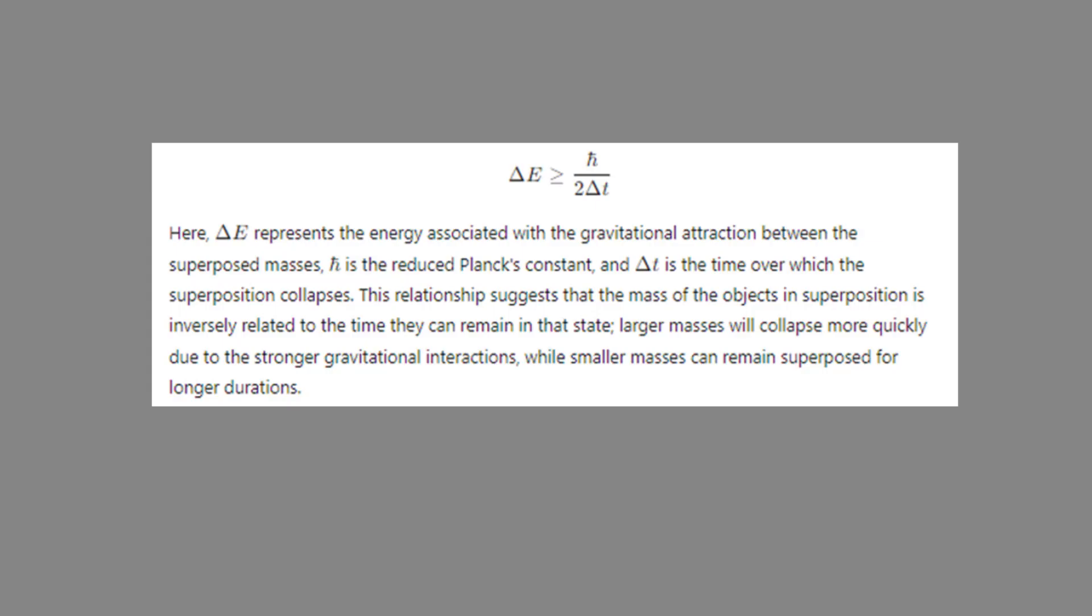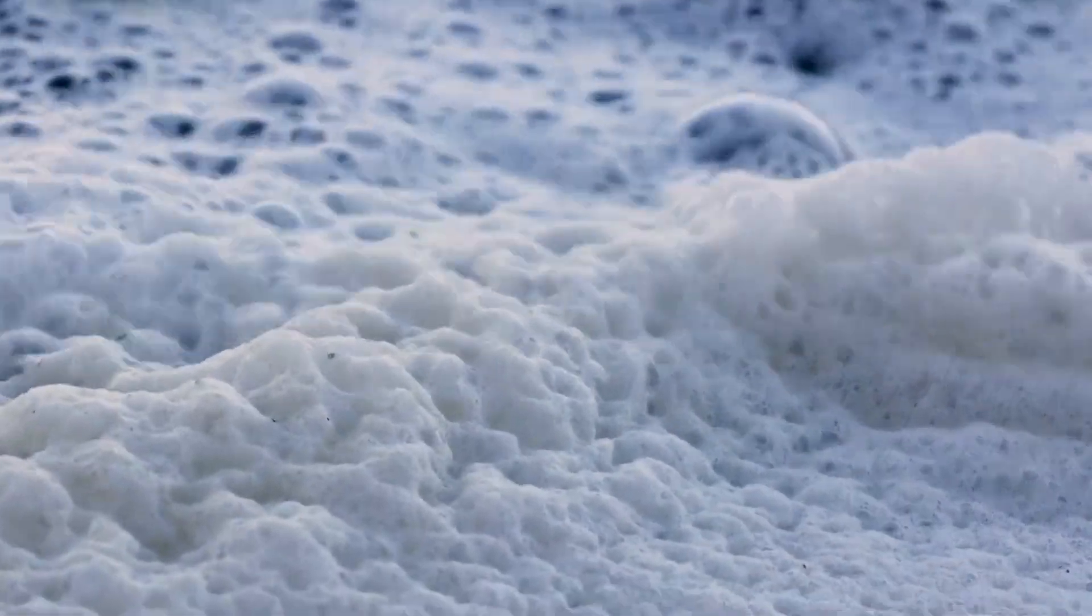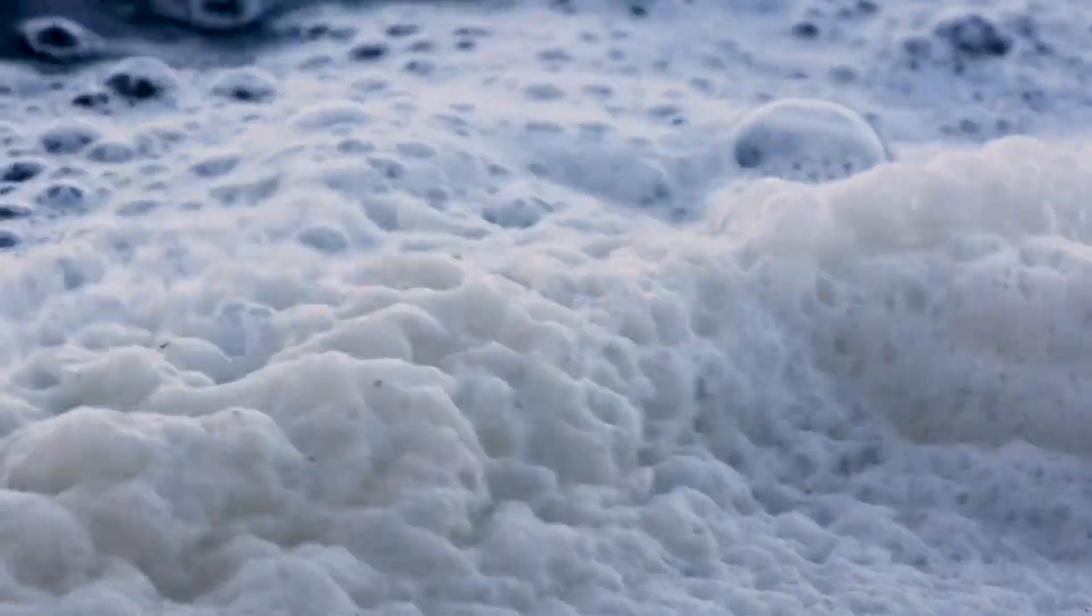Penrose proposes a new threshold for decoherence based on a modified version of the Heisenberg uncertainty principle. Traditionally, the uncertainty principle relates uncertainty to the position and momentum of a particle, but Penrose's version substitutes time and energy. For example, Penrose calculates that a superposition of a one kilogram mass will collapse almost instantly, in about 10^-37 seconds.